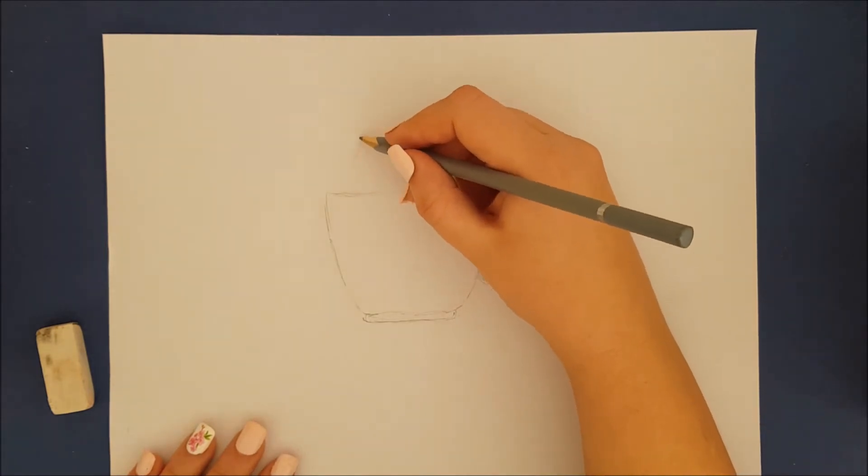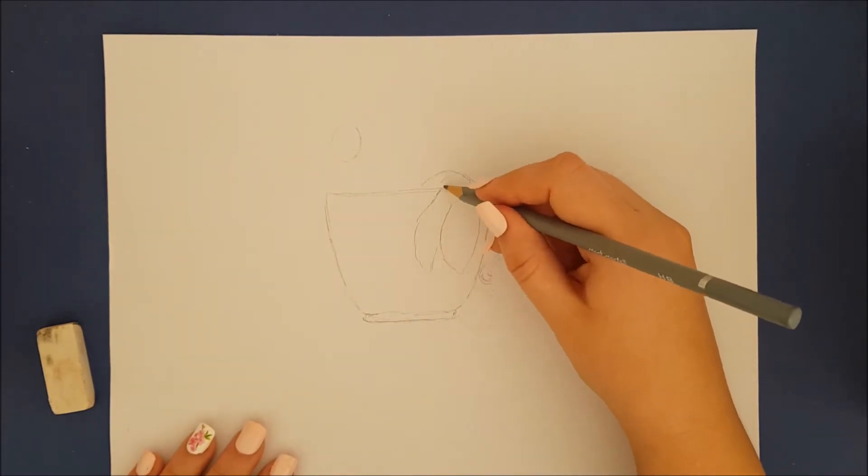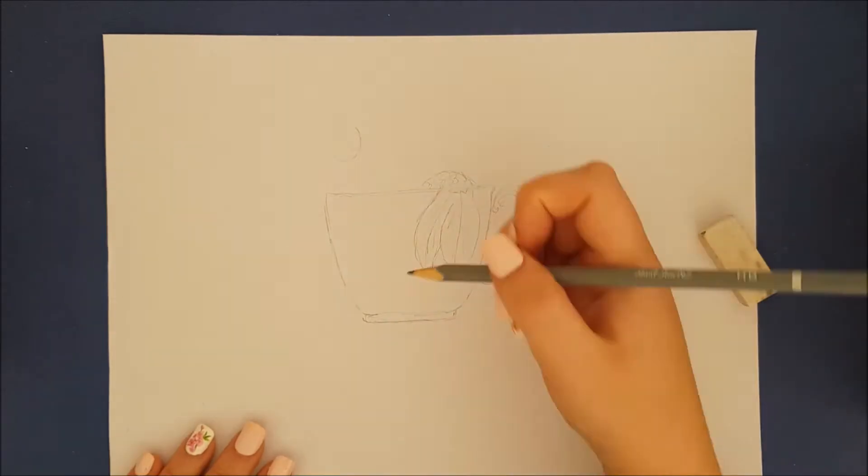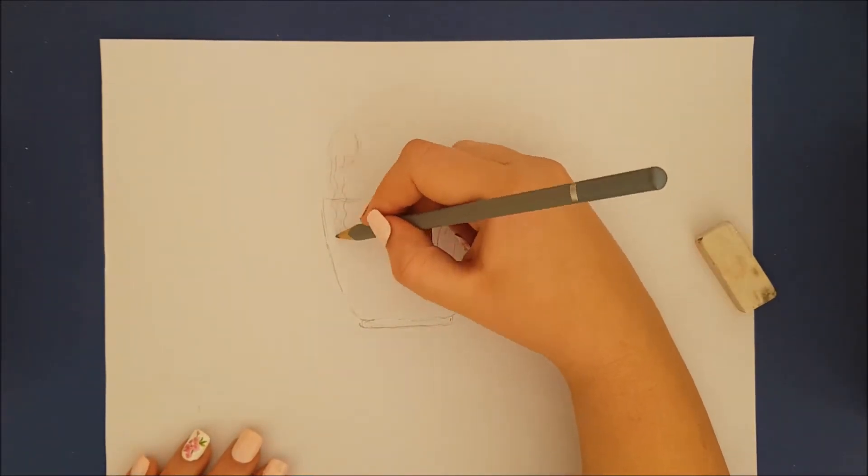Next I draw where about her head will be and then I draw her tail. When I am happy with her tail I add hair, her face and arm.